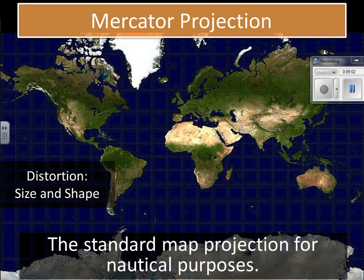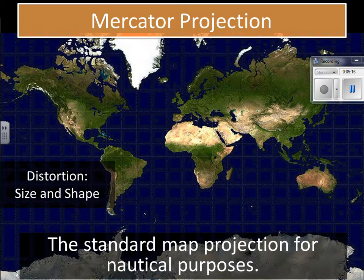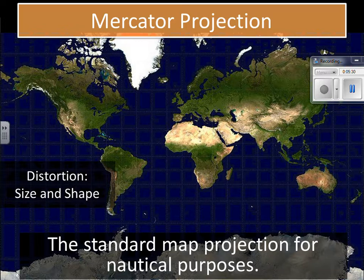One of the most famous ones is the Mercator projection. This distorts both size and shape, but it's oftentimes used for nautical purposes. You will oftentimes see this on the AP exam — sometimes they will give you a map and ask you what type of projection it is. The reason it's used for nautical purposes is you have a lot of water being shown on this map, so the oceans are really demonstrated here.